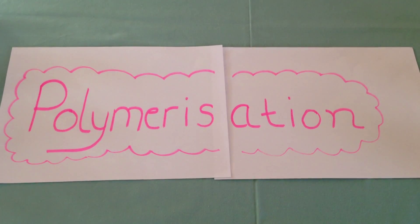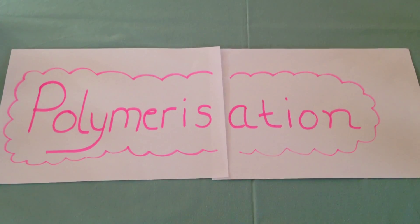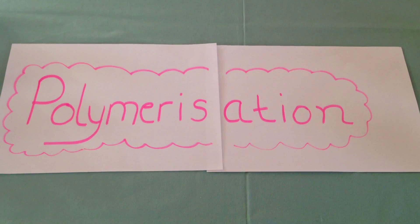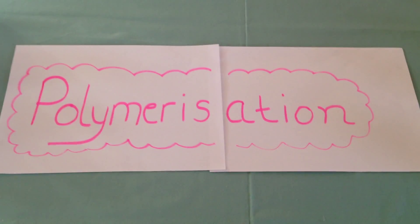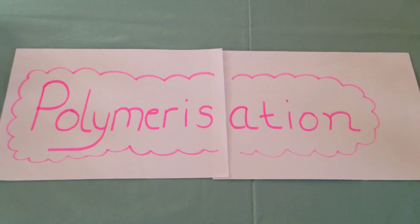For many polymers, the monomer that they are formed from is an alkene. Alkenes contain at least one double covalent bond between carbon atoms. The double bond makes them very reactive.